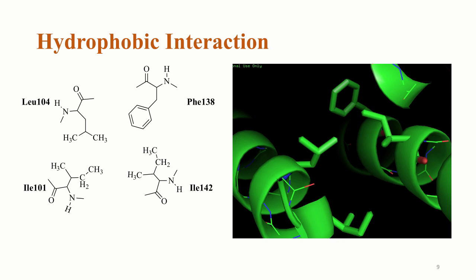As you can see, the main chains of these amino acid residues are exposed to the surface of the protein, where they can interact with water molecules, since the main chain of the protein is polar, containing an amine and a carbonyl group.